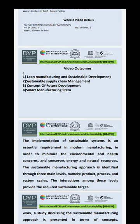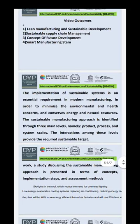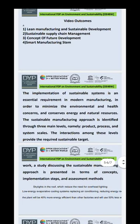The sustainable manufacturing approach is identified through three main levels, namely product, process, and system. The integration of these levels provides the required sustainable target. Work study discussing the sustainable manufacturing approach is presented in terms of concept and implementation steps and assessment method.